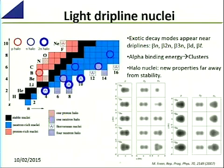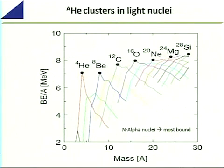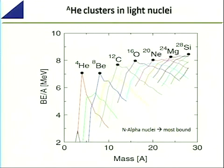Why is it that you have nuclei formed by alpha clusters? If we look at this plot showing different mass isobar chains — where an isobar chain has all elements of the same mass — the y-axis is binding energy per nucleon. What we see is that for all cases — mass 4, mass 8, mass 12, mass 16 — the most bound nucleus of the isobar is always an integral number of alpha particles. This means there is an affinity for nuclei to be built upon alpha particles.